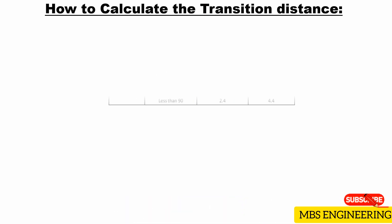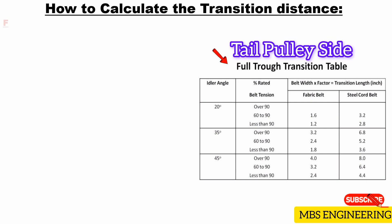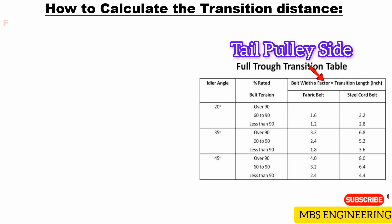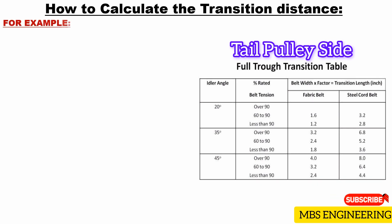We will now discuss how to calculate the transition distance of the conveyor. The following tables provide guidance on the proper transition length based on the system idler angle and the percentage of rated belt tension. To find the minimum recommended transition distance, multiply the belt width by the transition distance factor from the table. Please refer to the full trough transition table, which is useful for calculating the transition distance of the tail pulley side.